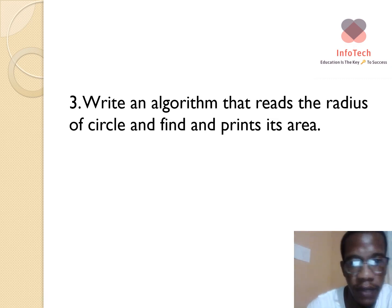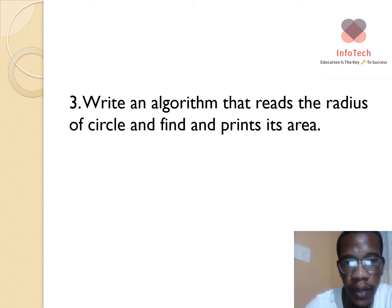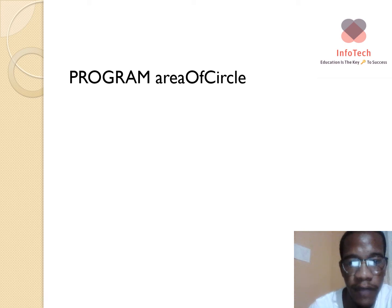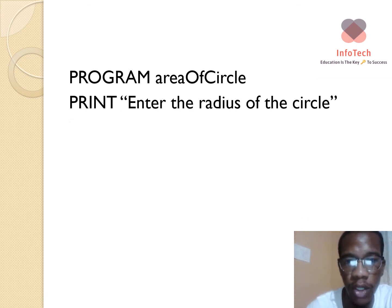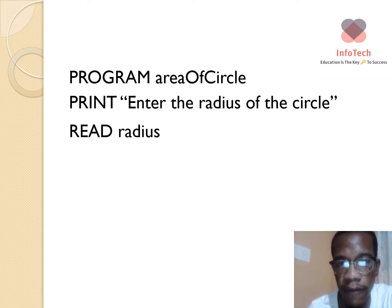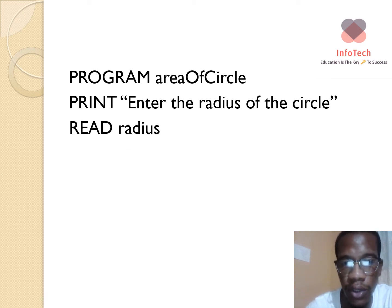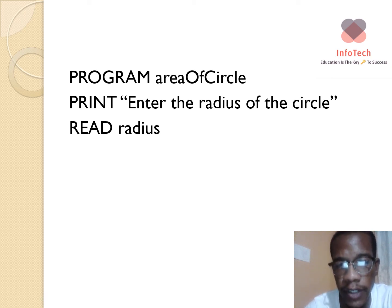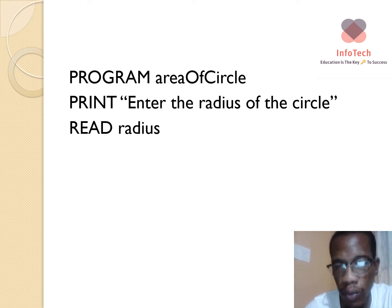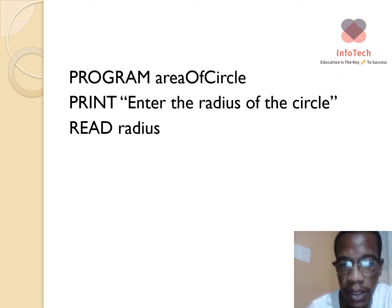For the third and final question, we write an algorithm that reads the radius of a circle and finds and prints its area. We name this program 'Area of a Circle' and prompt the user to enter the radius. We know from mathematics that the area of a circle is pi r squared, so let's represent that in an algorithm.